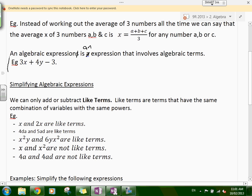Simplifying algebraic expressions: we can only add or subtract like terms. Like terms are terms that have the same combination of variables, and each variable has to have the same power. It's the same power, same combination of variables. It has to be exactly the same.